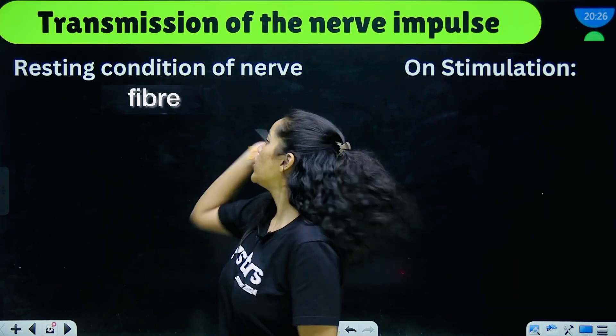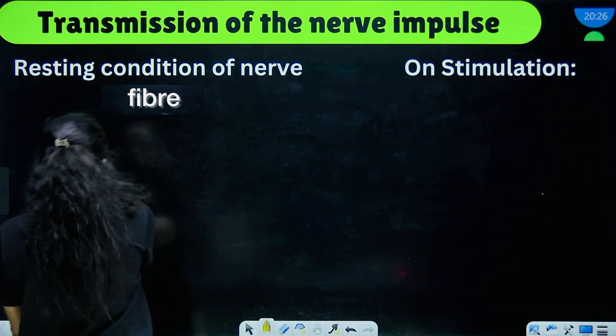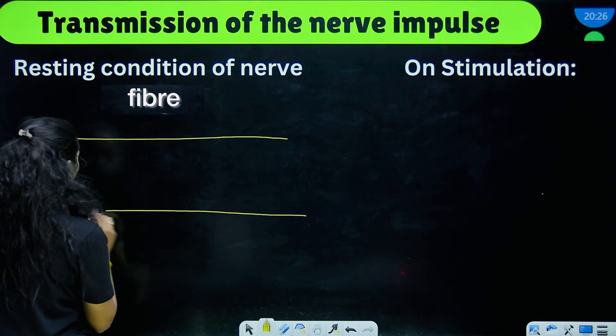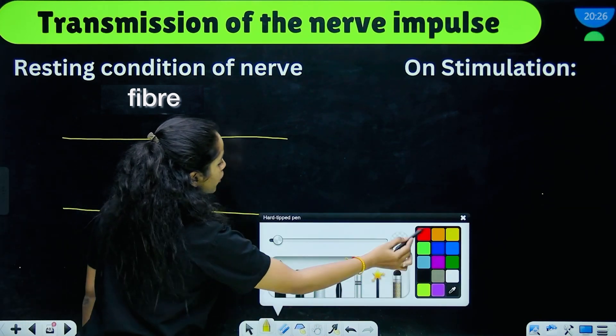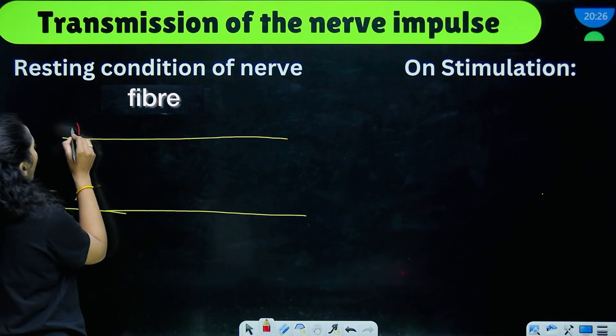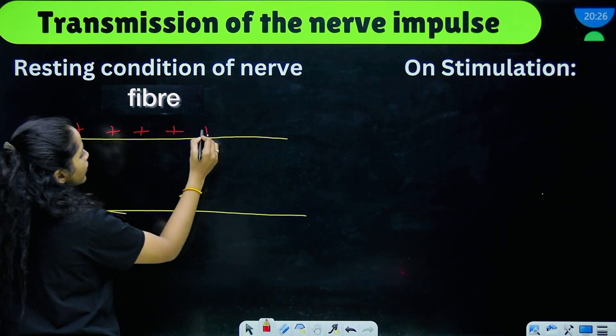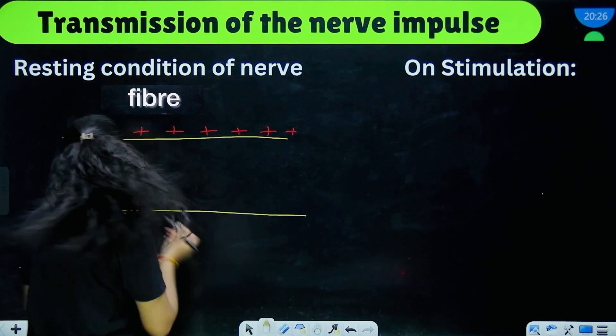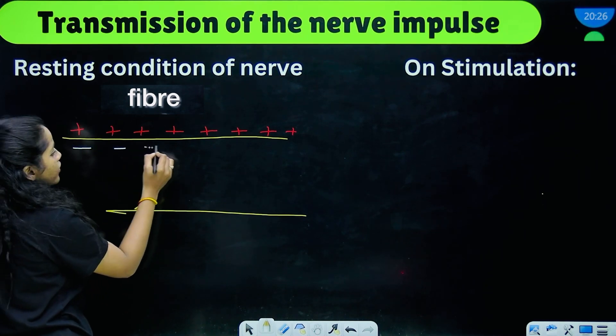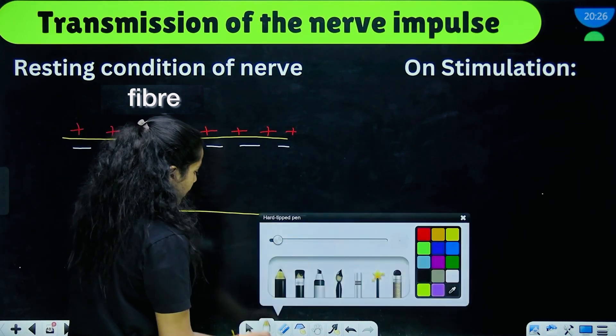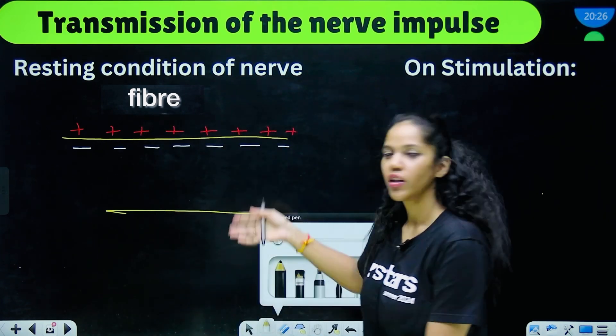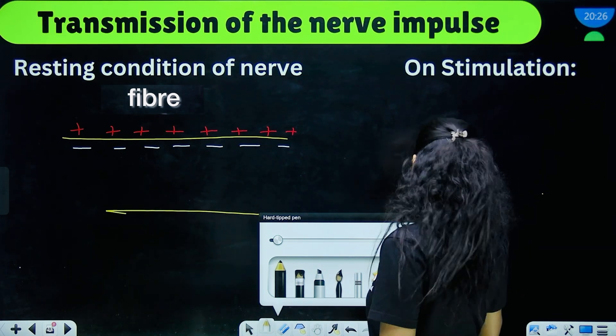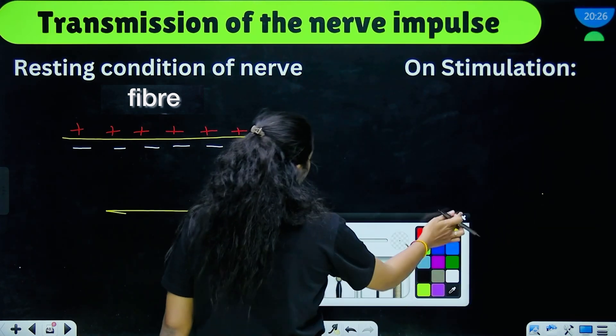So moving on, we are going to be talking about the transmission of a nerve impulse. Again refreshing your memory, this is the resting condition of a nerve fibre where you have the positive charges on the outside of the nerve fibre and you have the negative charges on the inside of the nerve fibre. This is mainly because of the sodium ions that are present.